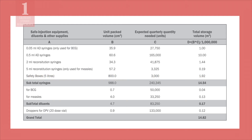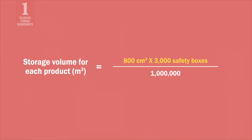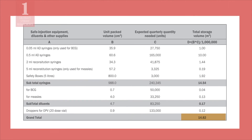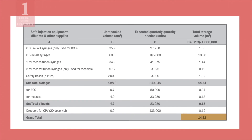Then, calculate the storage volume for each item by multiplying the unit packed volume by the quantity needed. Since storage capacity is typically given in cubic meters, divide by 1 million to convert the volume from cubic centimeters to cubic meters. In this example, if you multiply the unit packed volume of a safety box by the expected quantity of 3,000, you get a storage volume of 2,400,000 cubic centimeters. Divide by 1 million to convert to cubic meters and you get a total storage volume of 2.4 cubic meters. Once you repeat these steps for every item, add the volumes to get the total storage volume required.